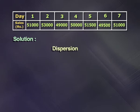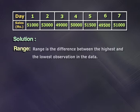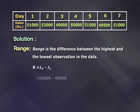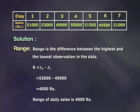We can now find the different measures of dispersion, starting with range. Range is the difference between the highest and the lowest observation in the data, that is R equals XH minus XL. The highest observation is 53,000 and the lowest observation is 49,000. So 53,000 minus 49,000 equals 4,000. Thus the range of daily sales is rupees 4,000.